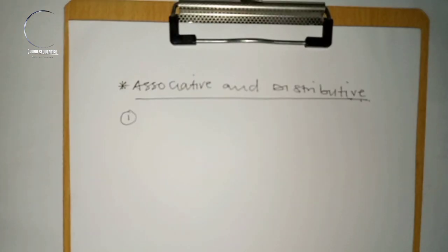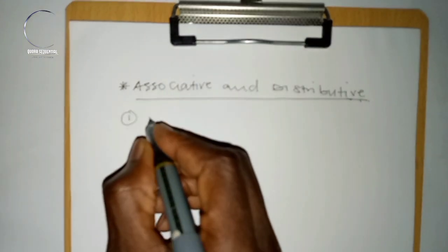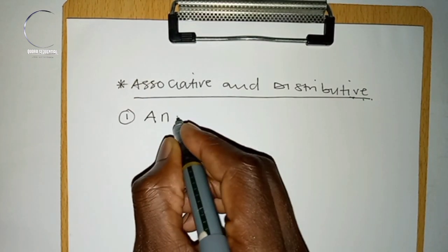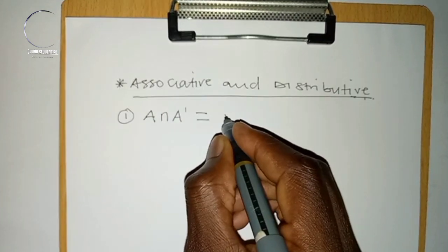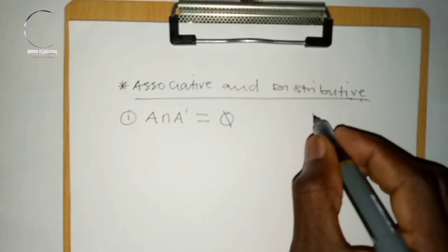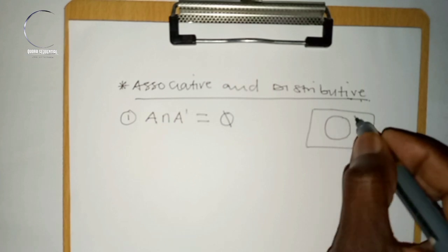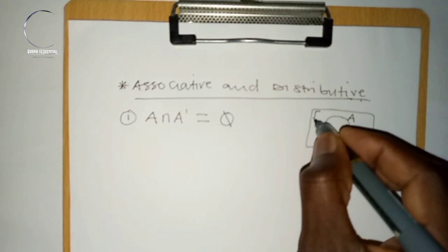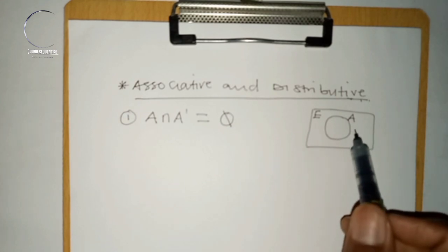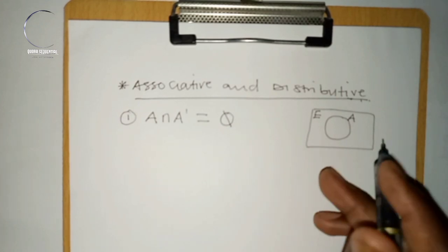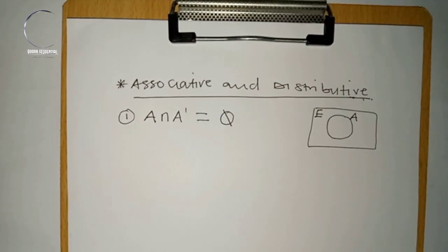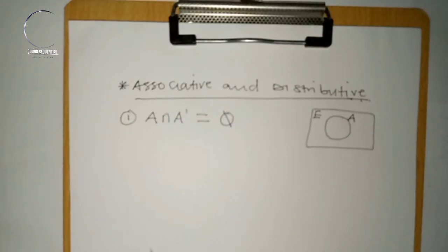We have a number of laws to properly use distributive and associative properties. The first rule states that a given set intersected with its complement gives us an empty set. For instance, A ∩ A' = ∅. If you demonstrate this on a Venn diagram, set A and its complement do not intersect at any point, which is why the result is an empty set.